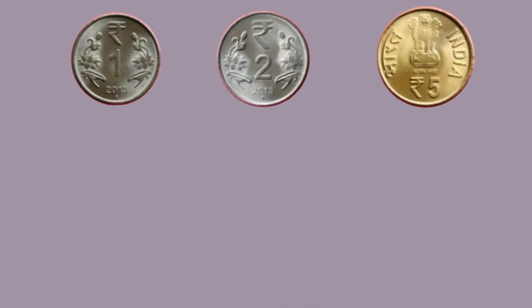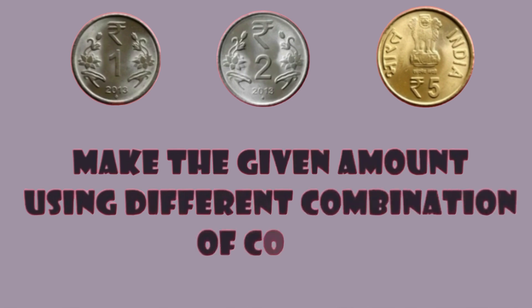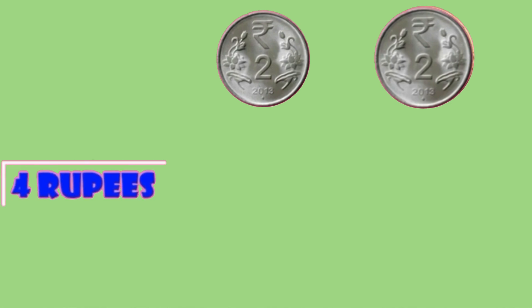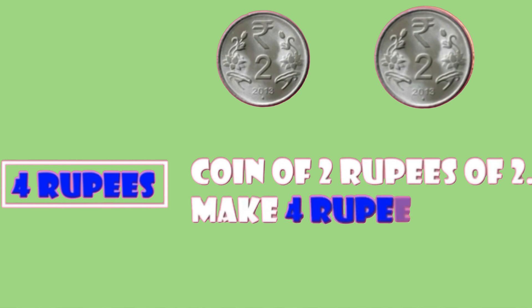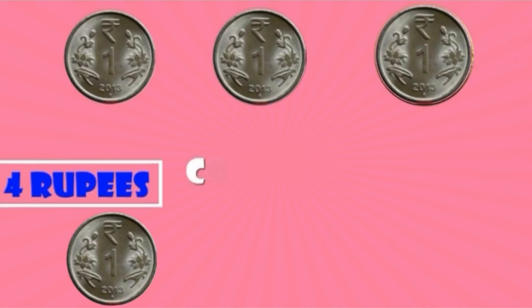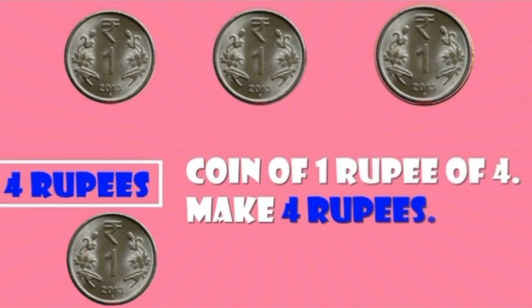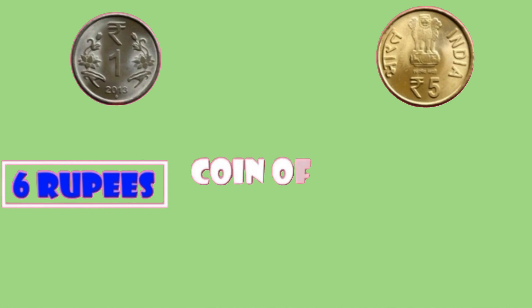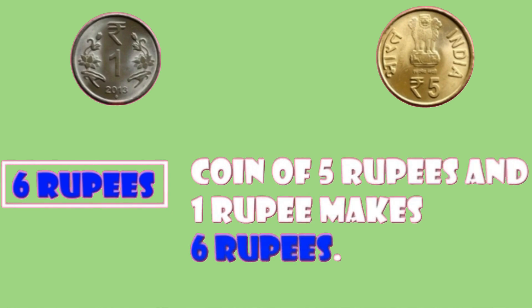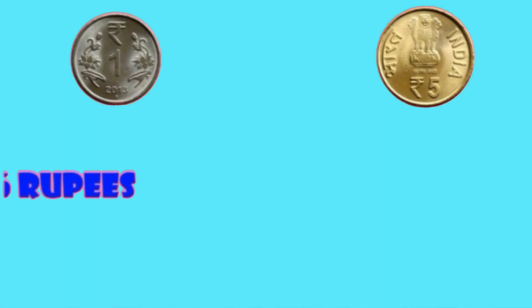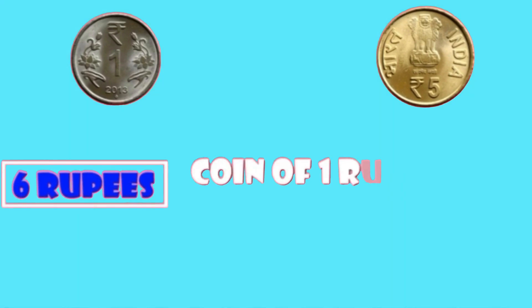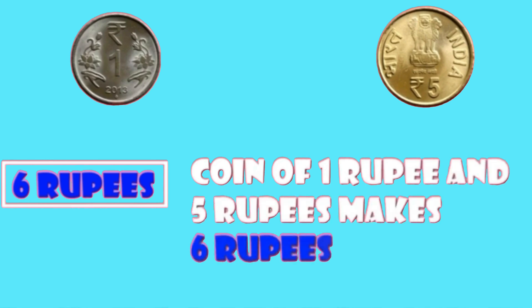Using one rupee coin, two rupee coin, and five rupee coin, make the given amount using different combinations of coins. Four rupees: two coins of two rupees makes four rupees, or four coins of one rupee makes four rupees. Six rupees: one coin of five rupees and one coin of one rupee makes six rupees, or one coin of one rupee and one coin of five rupees makes six rupees.